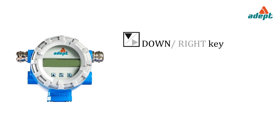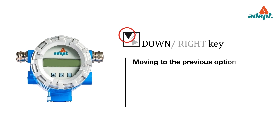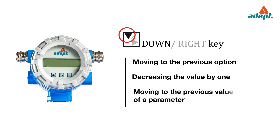Down key functions: moving to the previous option within a menu level, decreasing the value of a digit by 1, and moving to the previous value of a parameter.